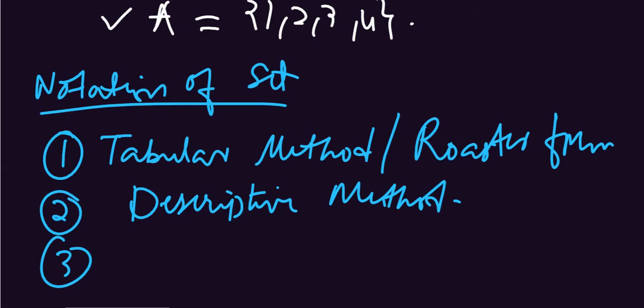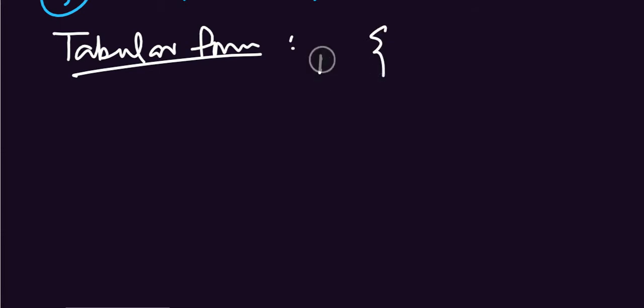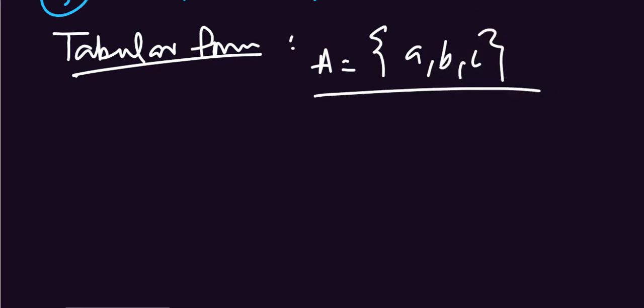The third one is set builder form. These 3 methods are used to notate a set. The first one is the tabular method — for example, A = {a, b, c}. This is called tabular form, in which the set is tabulated in curly brackets.